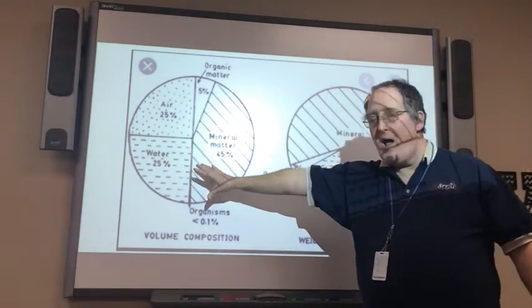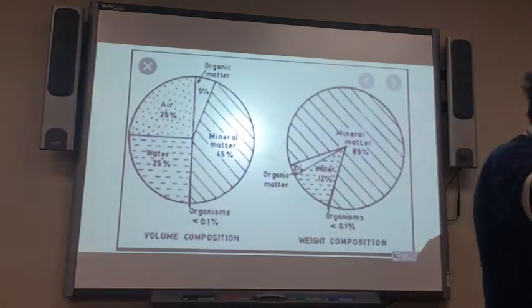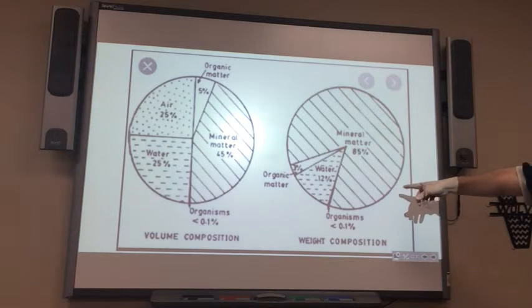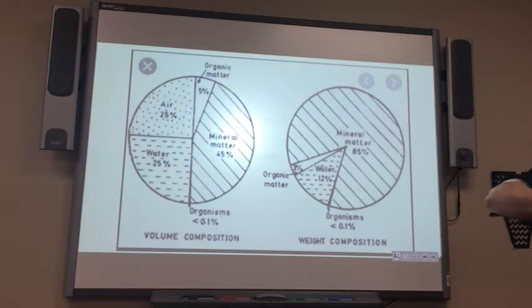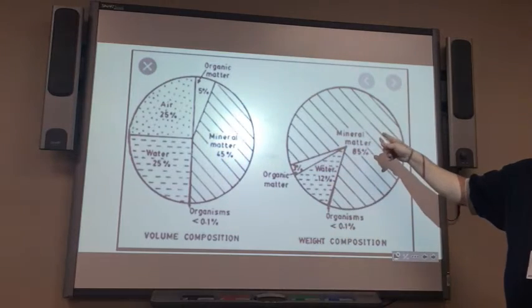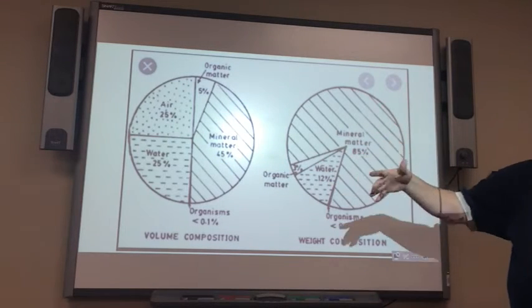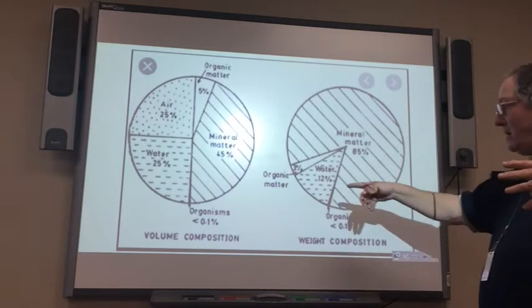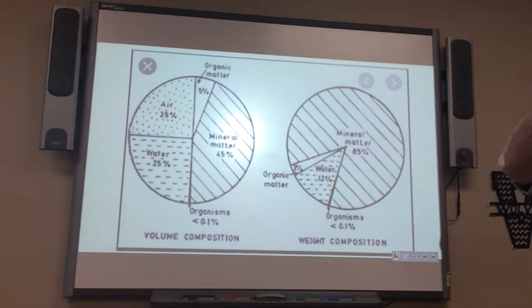This is what it was if you did it by volume. This is by weight. The mineral part, the non-living part, is 45% by volume, but it's the heaviest part. So if you take dirt and take just the mineral dead part out, it's the heaviest part of the dirt. That organic matter is very, very light in comparison. Because leaves, there's not a lot there to them.